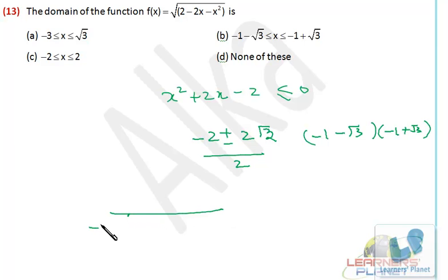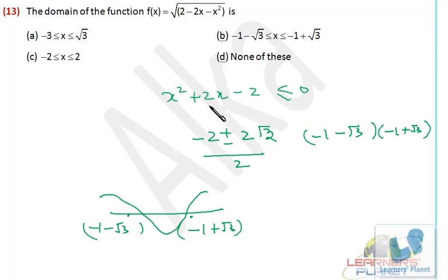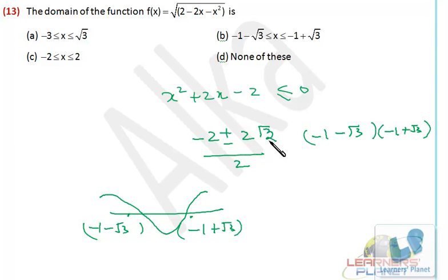So the two values will be minus 1 minus root 3 and minus 1 plus root 3, with 2 taken as common and cancelled out. Minus 1 minus root 3 will be the smaller value and minus 1 plus root 3 will be the bigger value. On the number line, minus 1 minus root 3 will be here and minus 1 plus root 3 will be here. We draw the curve — since we want the expression to be less than or equal to 0, we take the lower portion. So the domain is from minus 1 minus root 3 to minus 1 plus root 3, inclusive. So this is the correct choice.